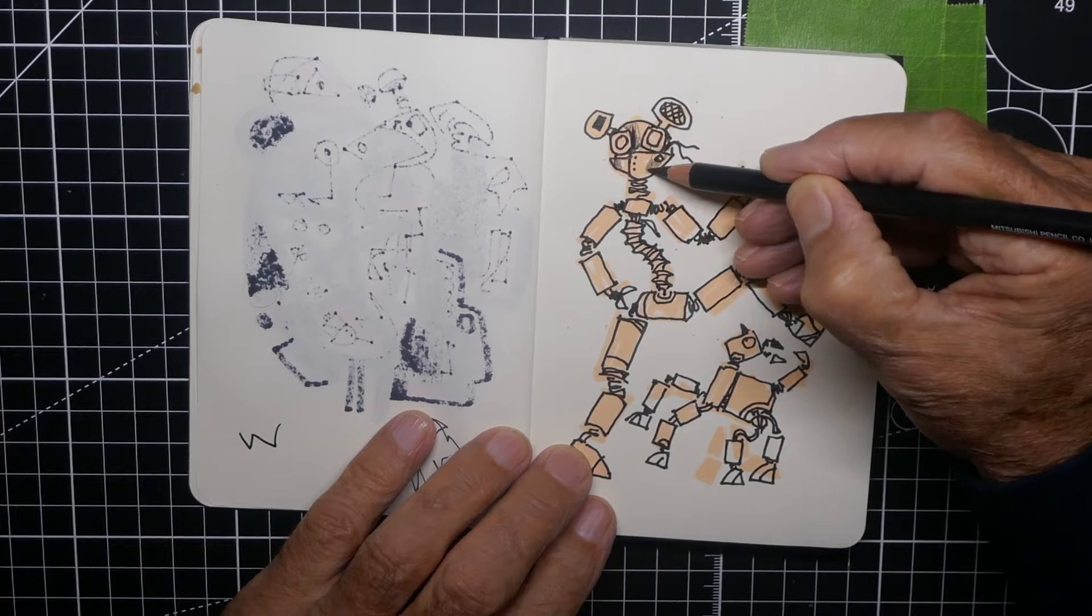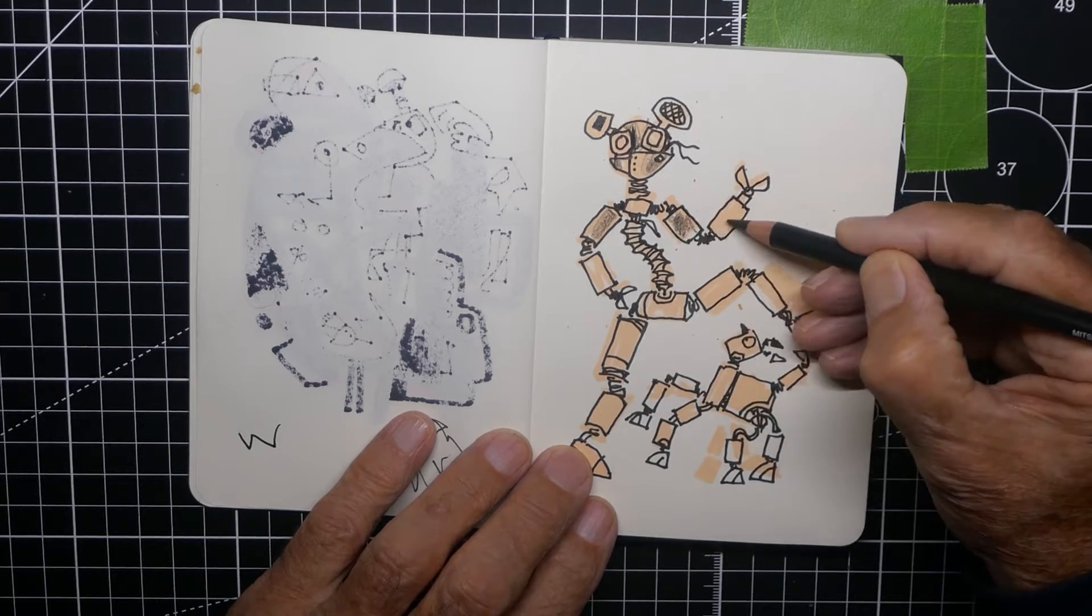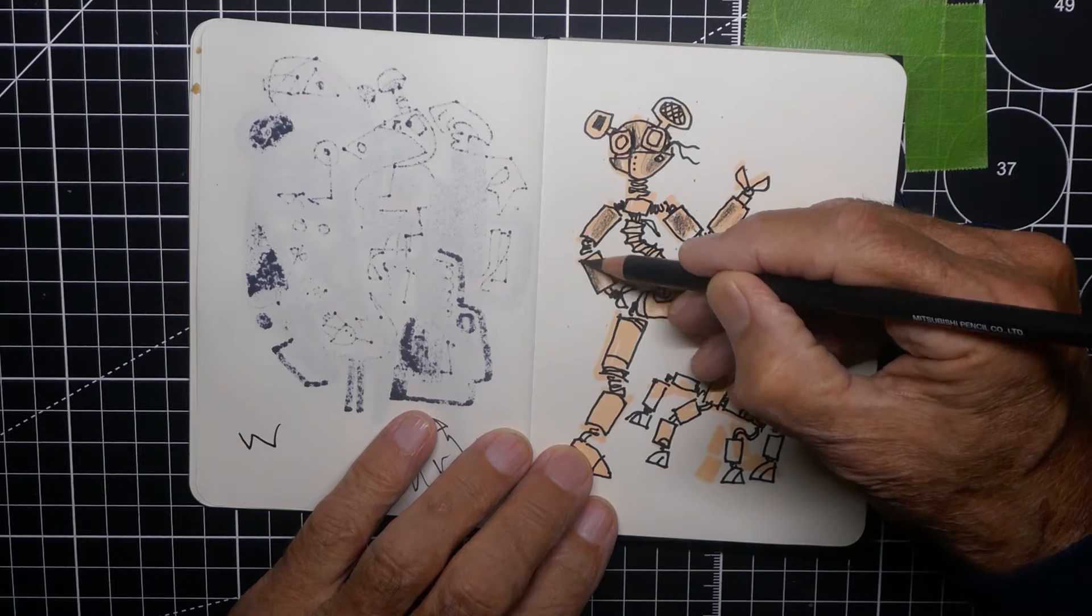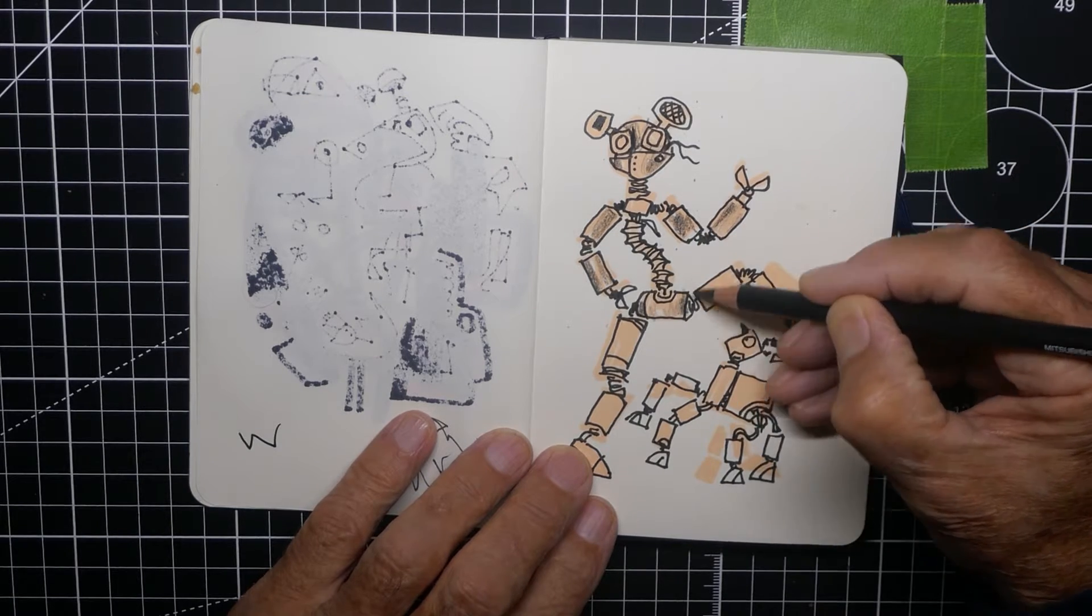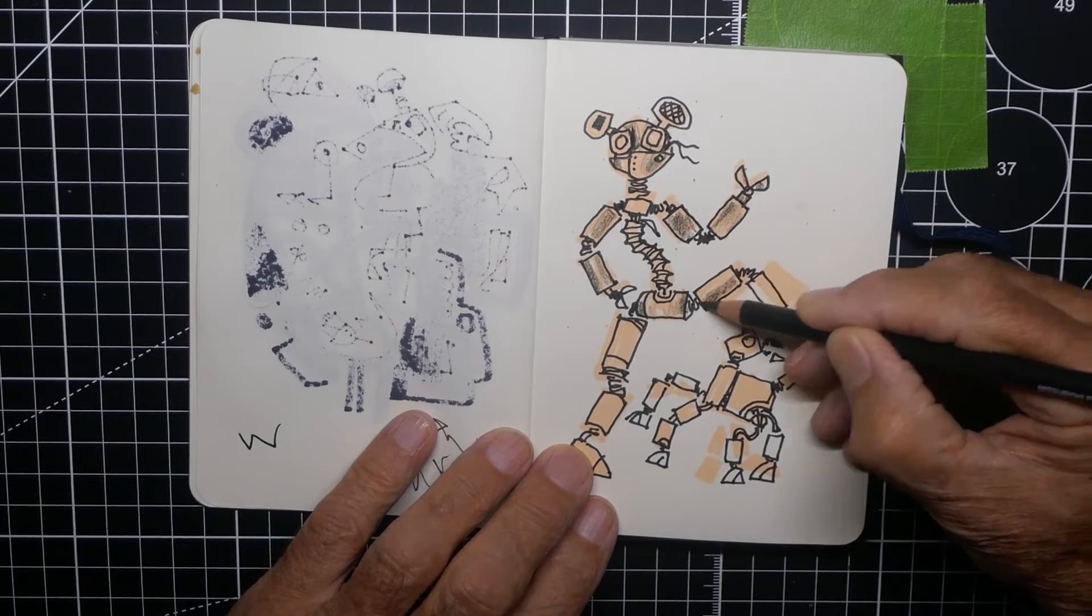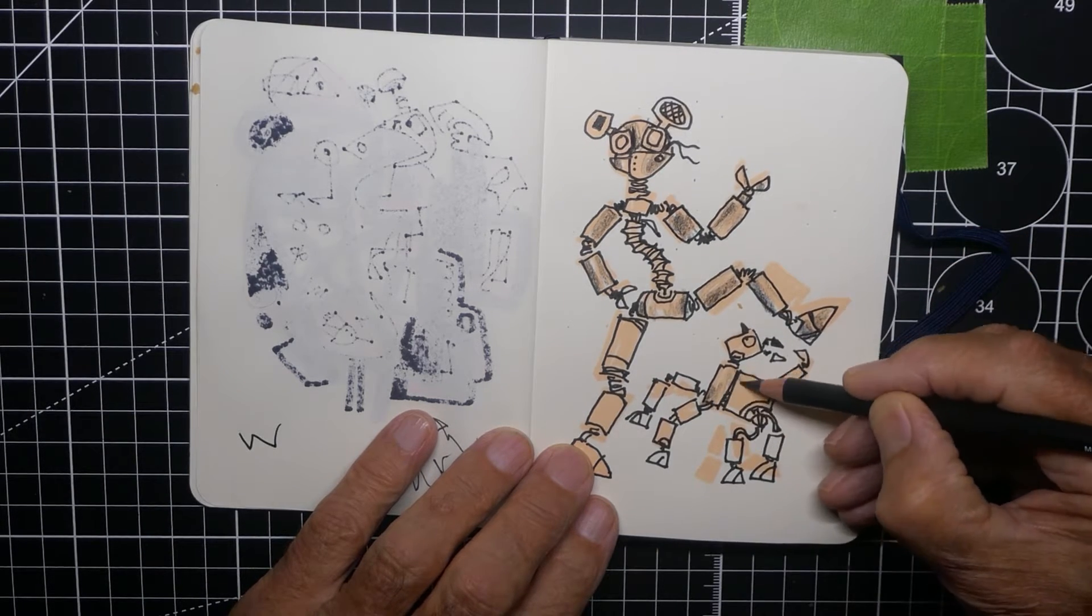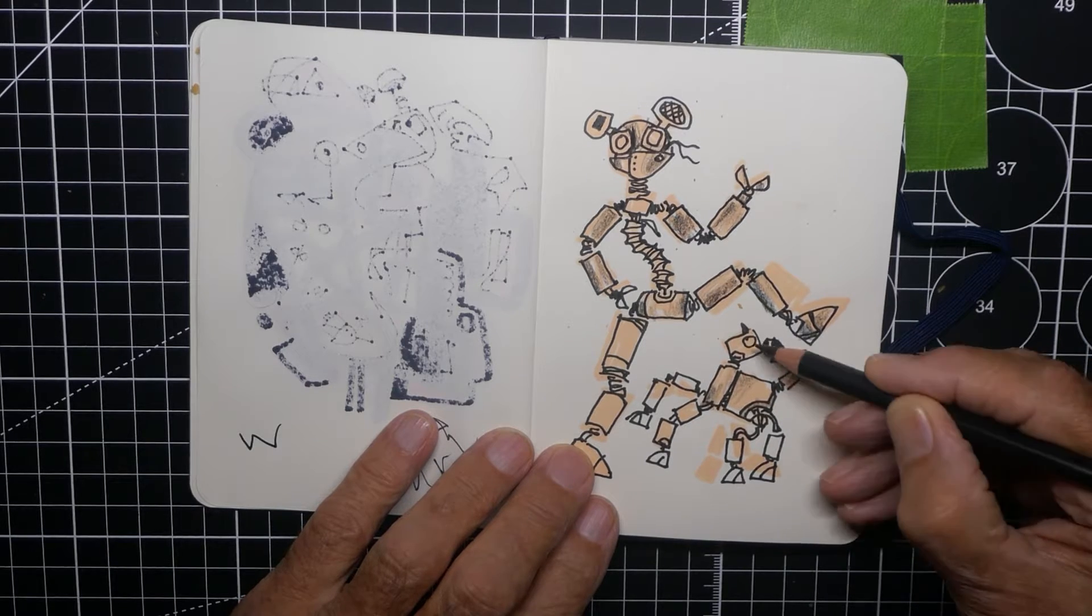And the shade I'm putting in now, shadows, whatever you like to call them, it's not shadows like an artist would do. They're just shapes of color, dark areas, just to hold the guy against the white background, so he's got a bit of prominence.